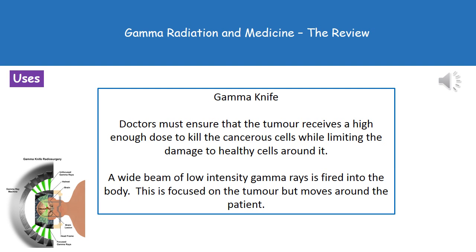Let's look at the gamma knife in a little more detail to understand how it actually works. The image in the bottom left corner shows the actual machine. We've got a source of gamma radiation that moves around the outside, and at all times it will be focused on the tumour. By moving around, the healthy cells surrounding the tumour will not be exposed to such a high dose. Basically, by moving that gamma source around, we focus on the tumour, giving it a very high dose big enough to kill it, while the healthy cells surrounding it receive a much lower dose and therefore shouldn't be damaged.